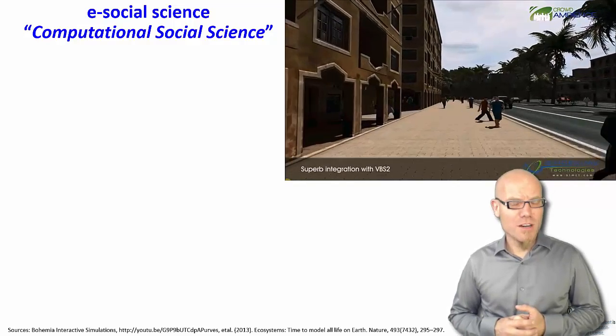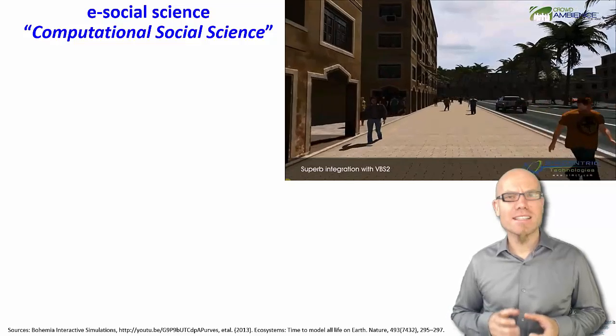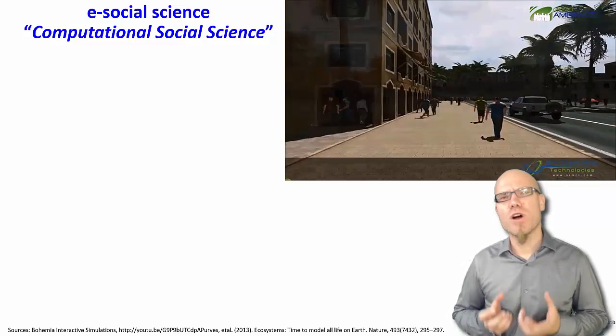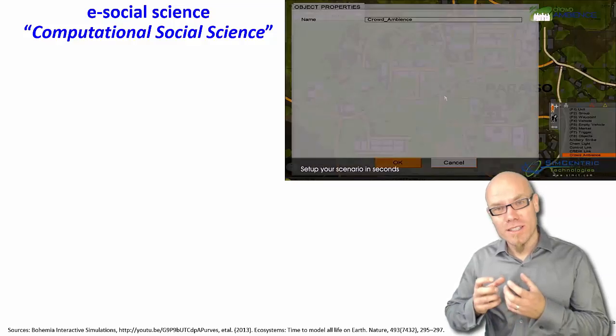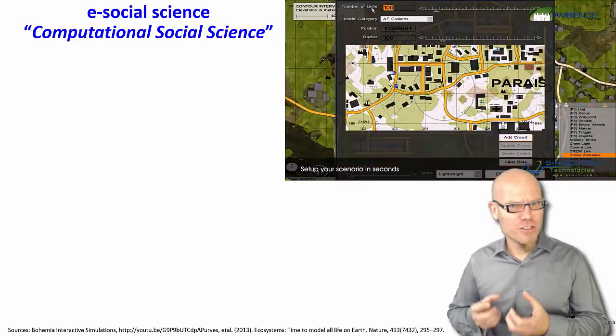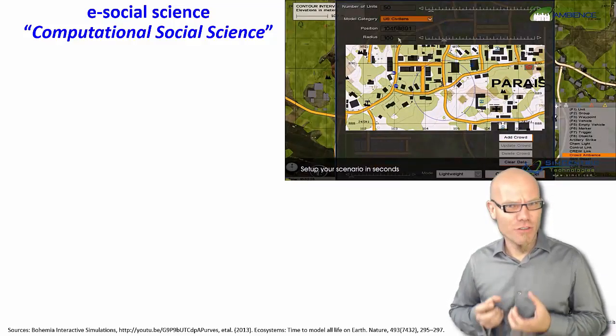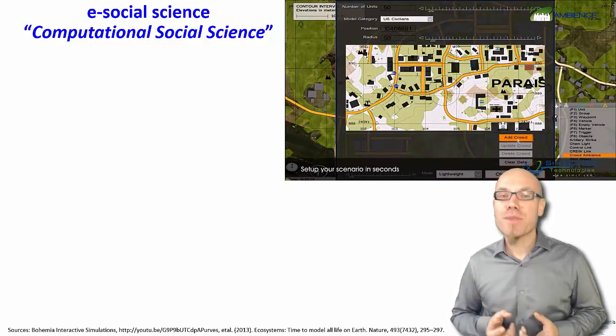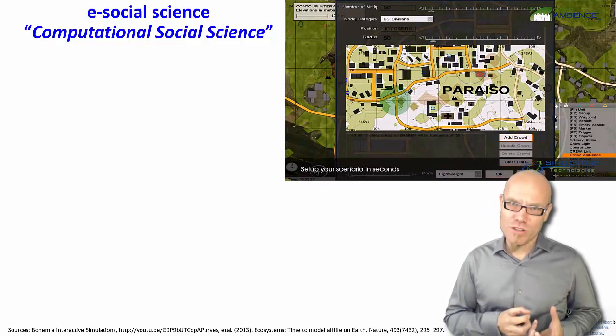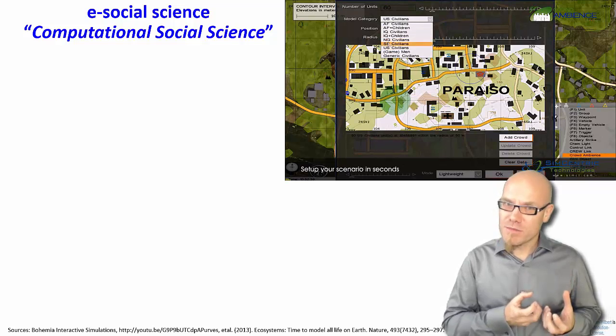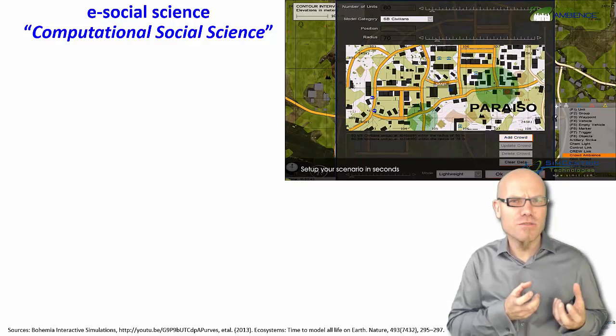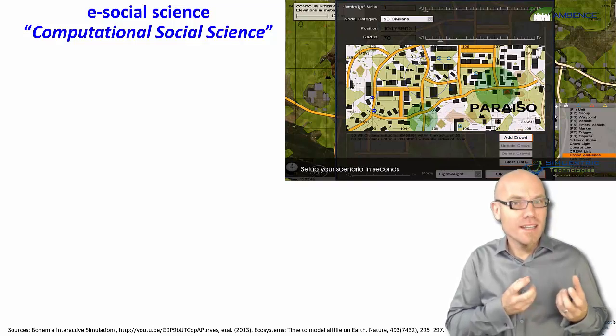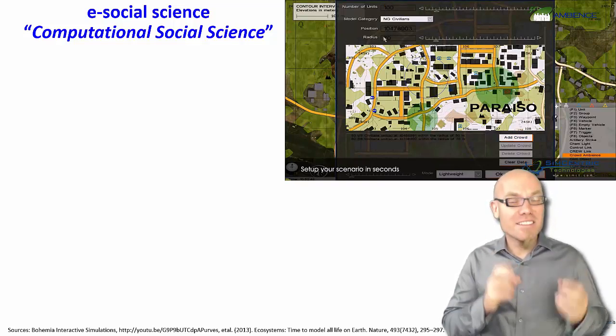Computational social science is about embracing the effects digitalization has on both fundamental acts of the scientific method: on the empirical work, especially through big data and the digital footprint society leaves behind, and on theoretical work through using computer simulations to model future scenarios that do not necessarily exist in empirical data but in theory.